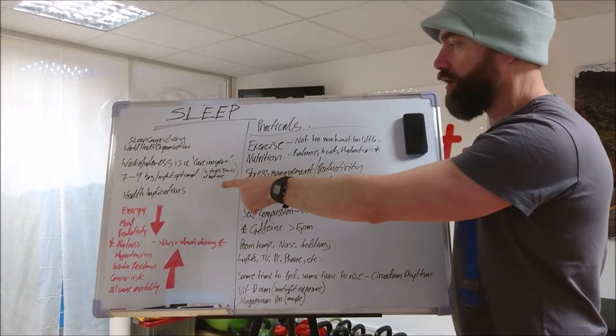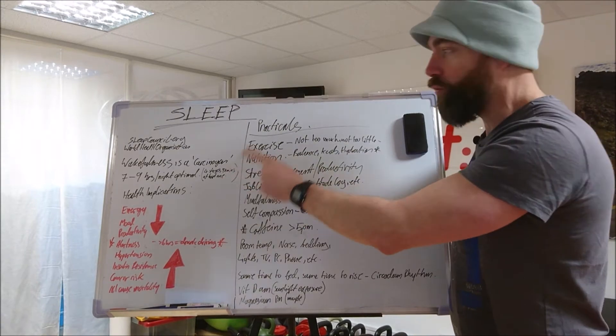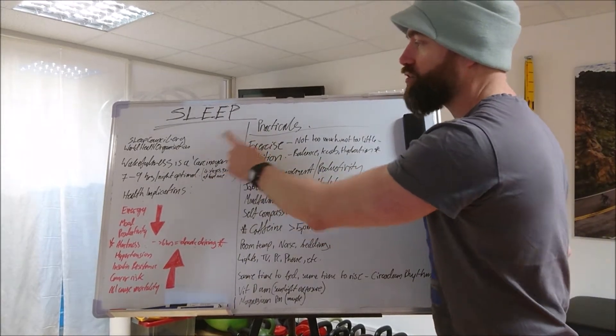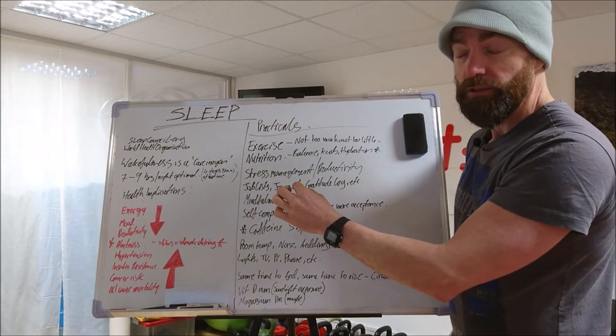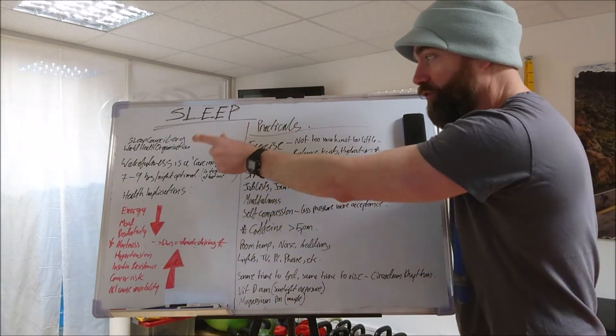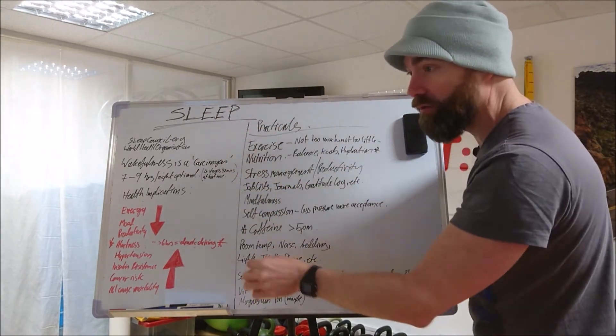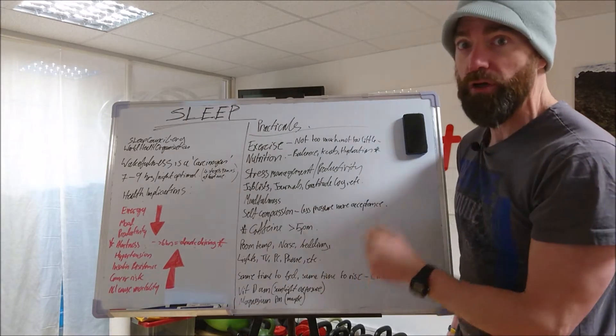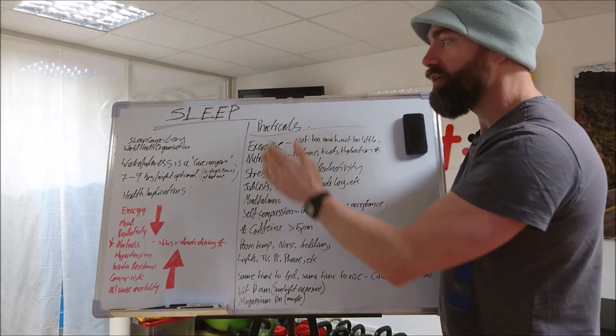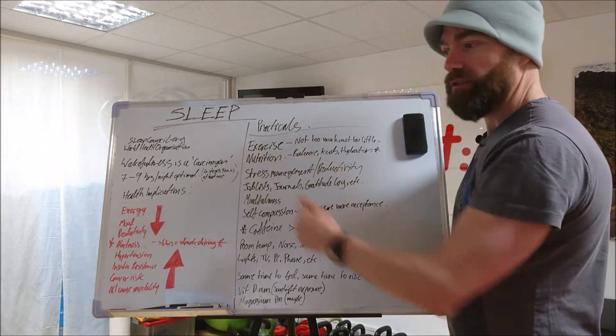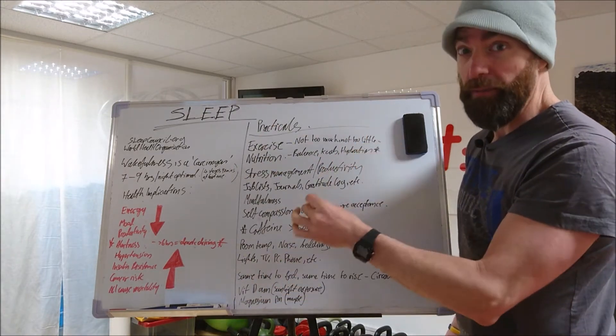Each stage lasts for about an hour and a half. So you want to complete at least one full cycle of sleep per night. So four stages of sleep per cycle, at least one full cycle per night, which is why seven to nine is optimal and less than six is pretty bad.